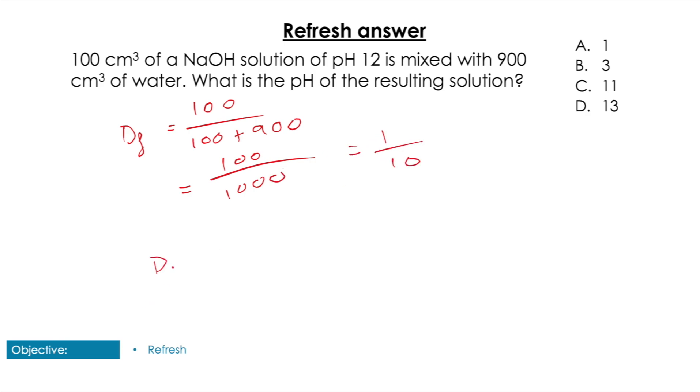Therefore we have a 1 to 10 dilution factor. Now the question isn't asking us that though. The question is asking us what's the pH going to be. We're going to reduce the OH concentration by 10 times, so we're going to lower the pH by 1. Remember it's a logarithmic scale, so the answer is of course going to be C.